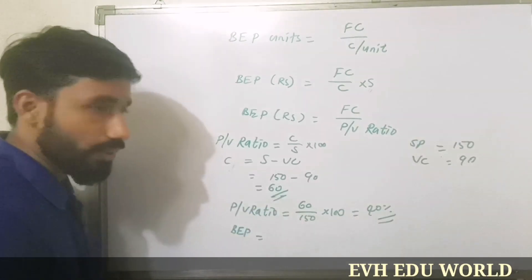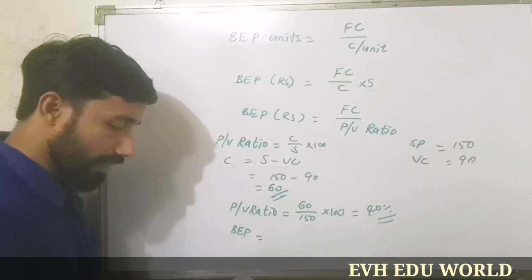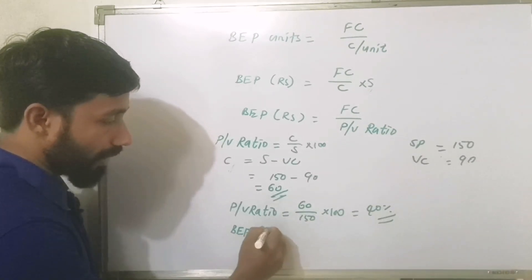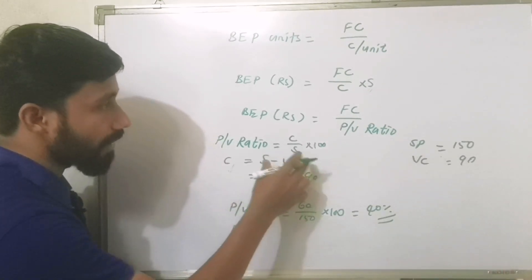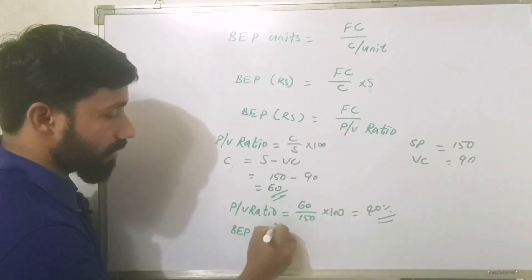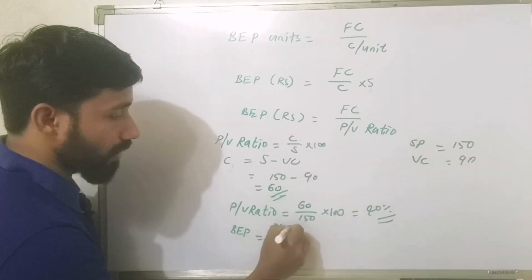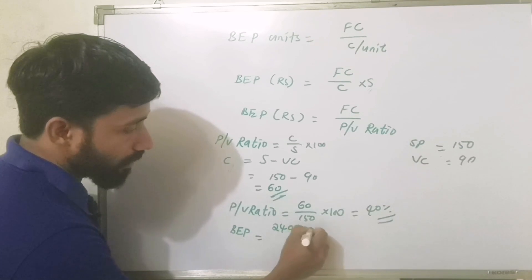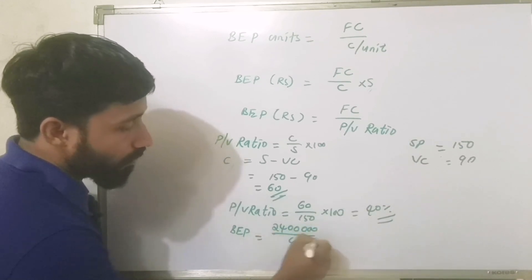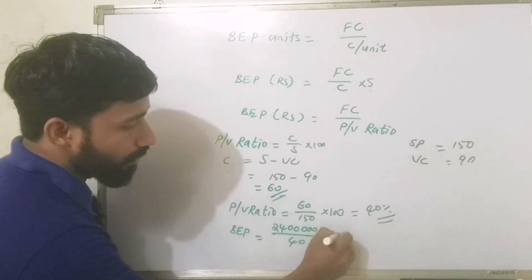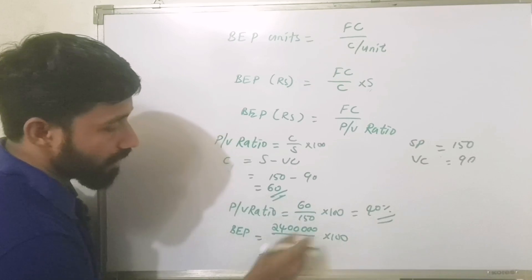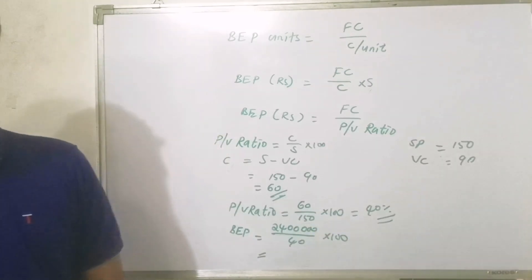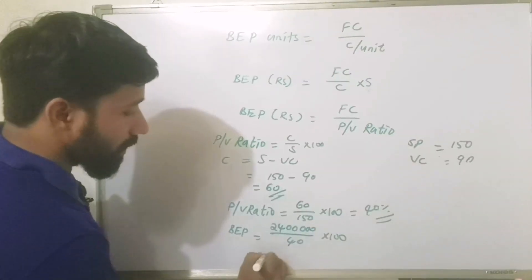Let's calculate the break-even point using PV ratio. Break-even point equals fixed cost divided by PV ratio: 24 lakhs divided by 40%, which is 40 into 100. This gives us a break-even point of 60 lakhs.